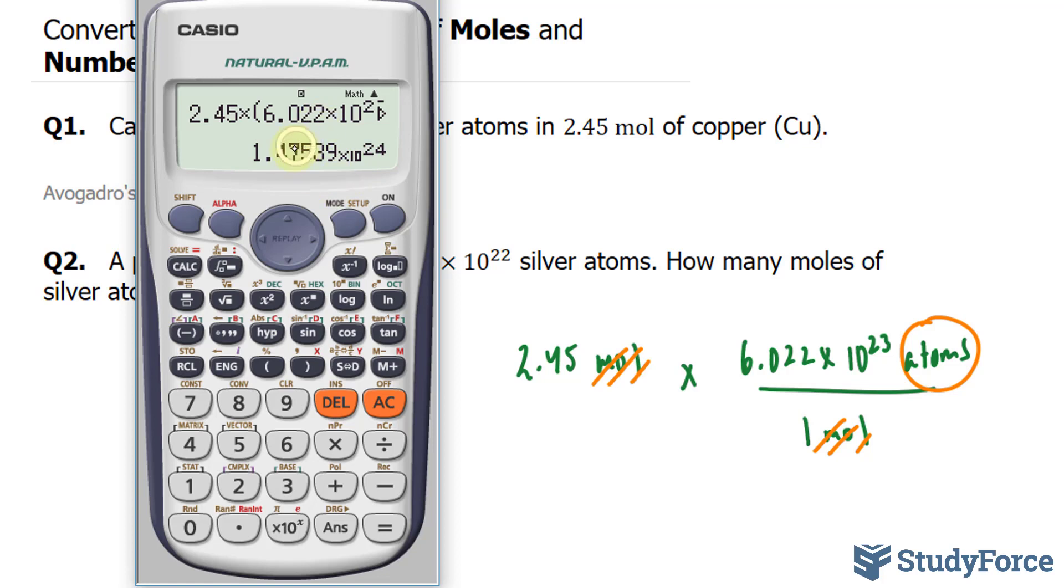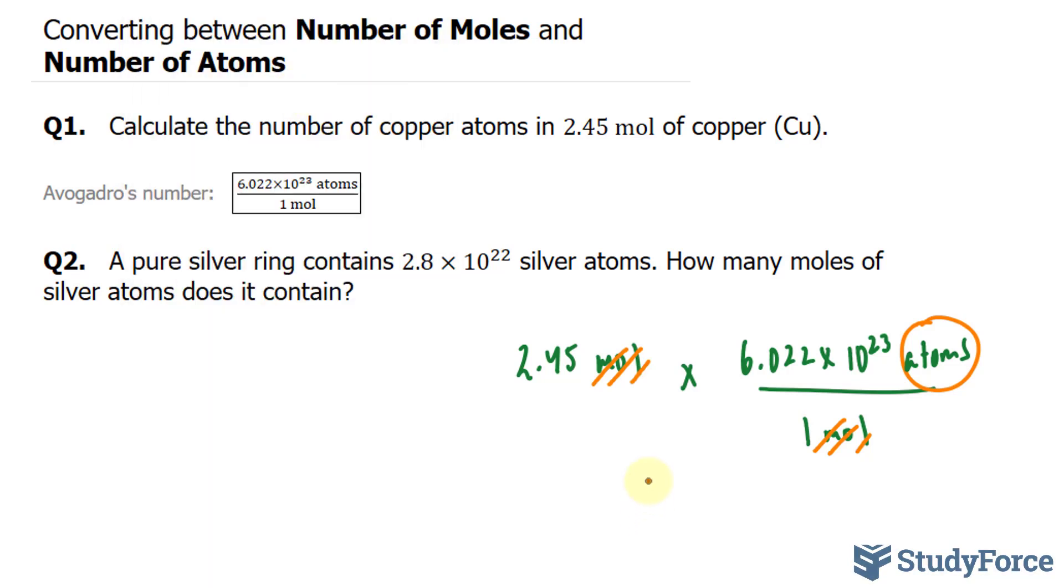This gives us 1.475 times 10 to the power of 24. Everything after the 7 is insignificant. But because the number after the 7 is a 5 and this number is odd, we're going to round up. So we get 1.48 times 10 to the power of 24 atoms.